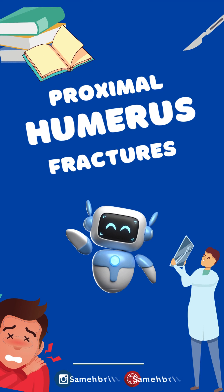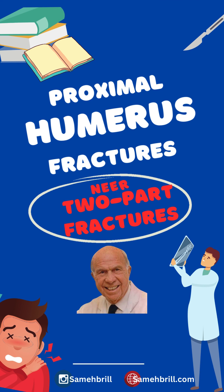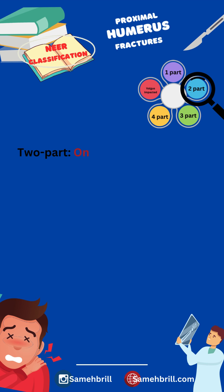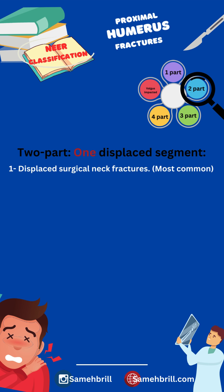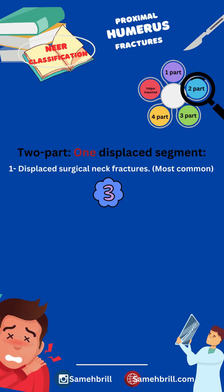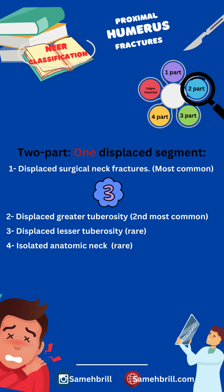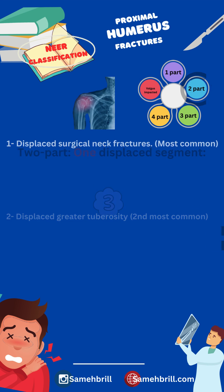Hey there and welcome back. Today we'll discuss NEAR's two-part fractures in detail. Two-part fractures have one displaced fragment. They can be displaced surgical neck fractures, which have three subtypes, displaced greater tuberosity, displaced lesser tuberosity, and isolated anatomical neck fractures.